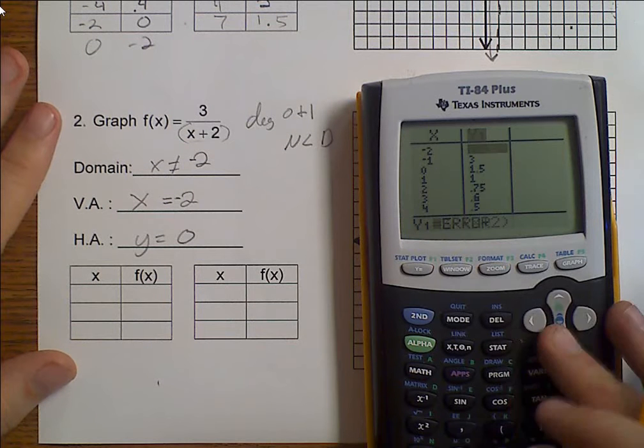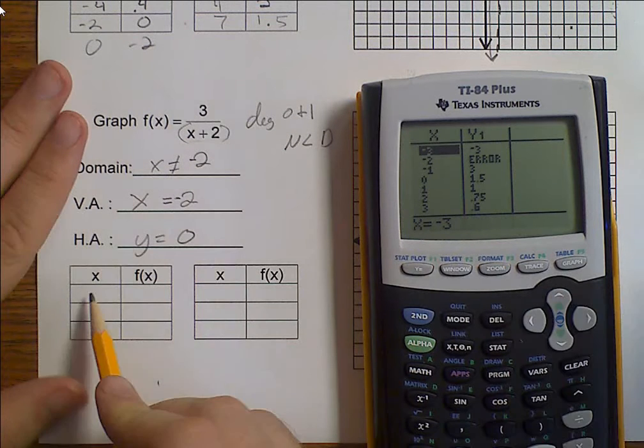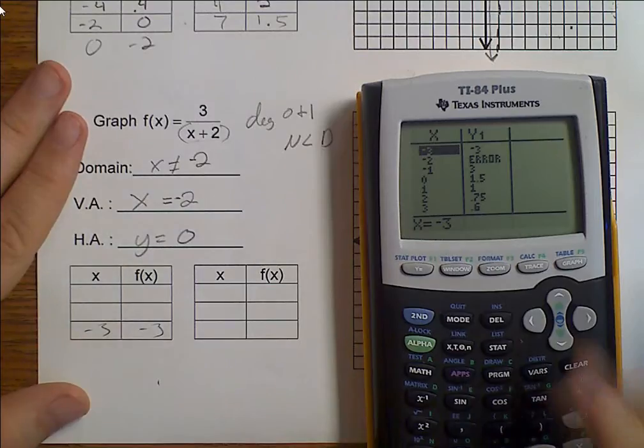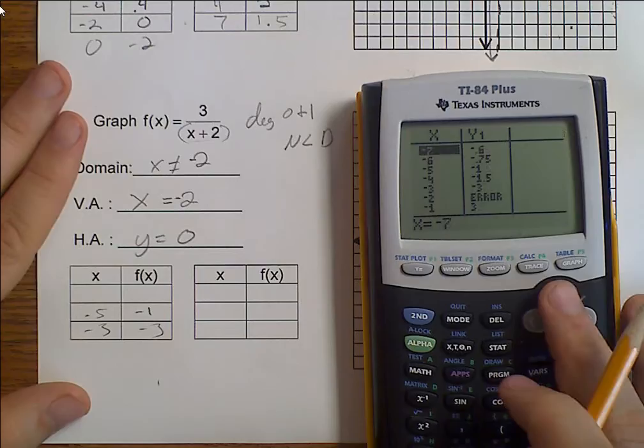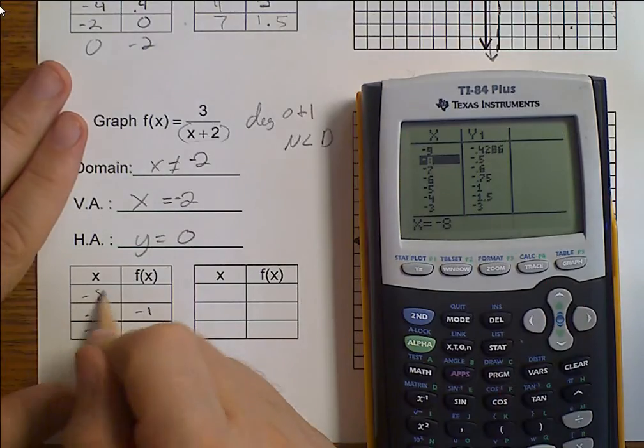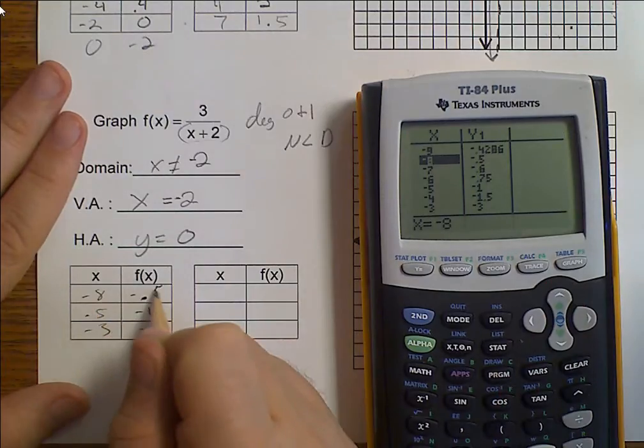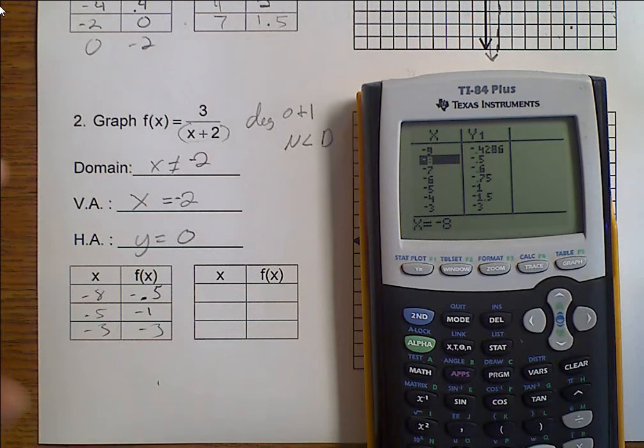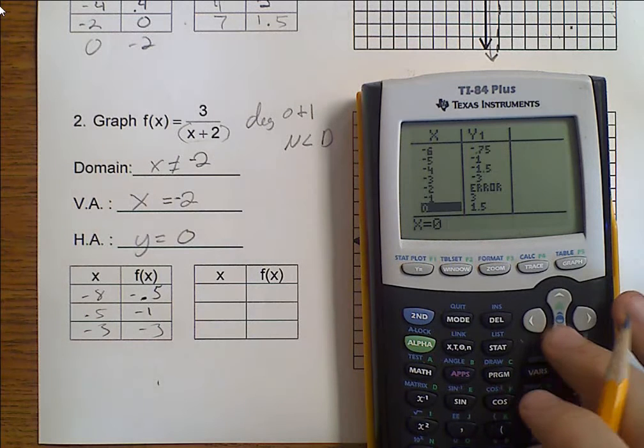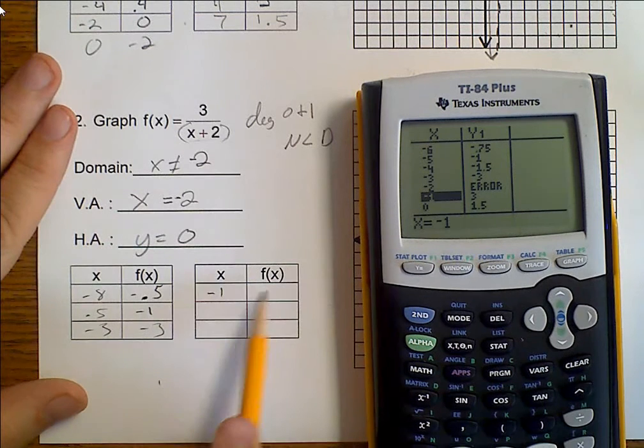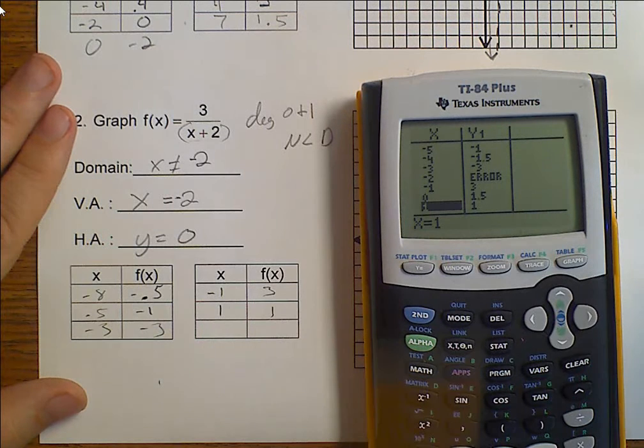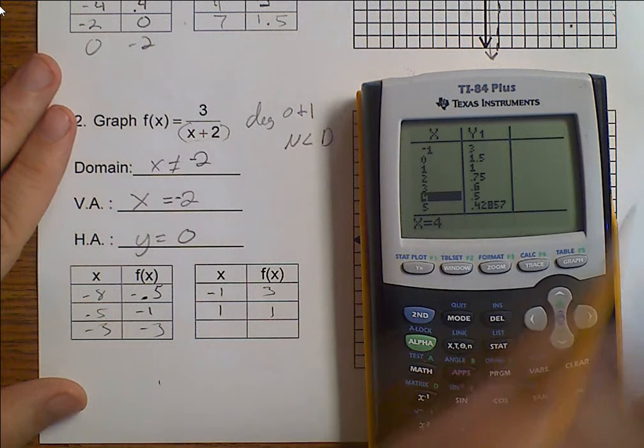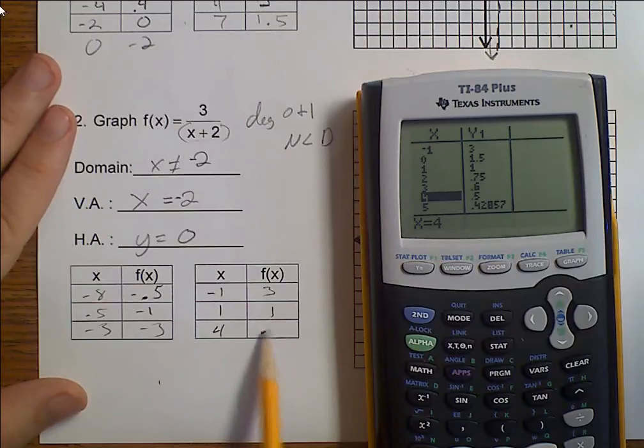Not that big of a deal. Get my asymptote nice and drawn. And now we come back to some points. Well, negative 2 is my error. So I'm going to do negative 3, negative 5, and negative 8, negative 0.5. Let's get some numbers that are bigger. We are at negative 1, 3, and 1, 1, and 4.5.